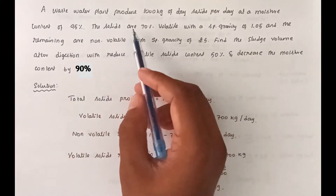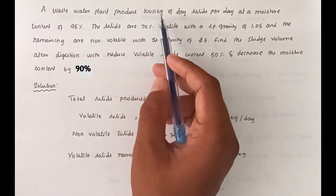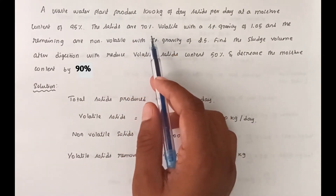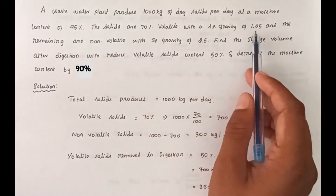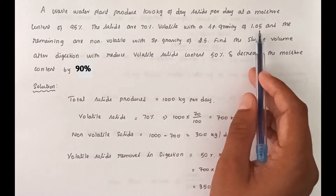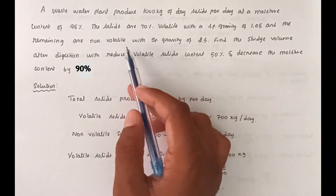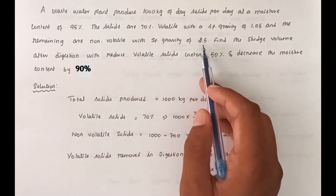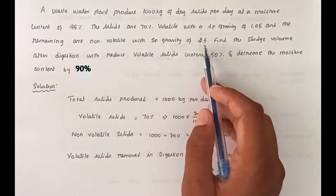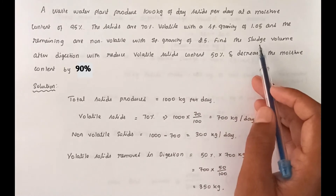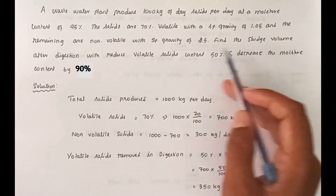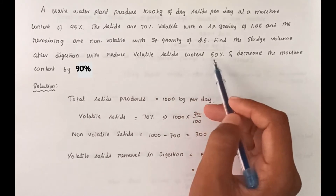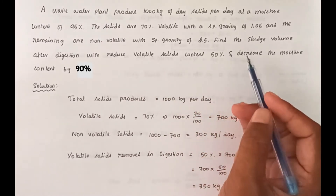So the wastewater plant produces 1000 kg, of which 70% are volatile solids with a specific gravity of 1.05, and the remaining are non-volatile solids with a specific gravity of 2.5. After digestion, the volatile solids are 50% reduced, which is why the sludge volume is reduced.